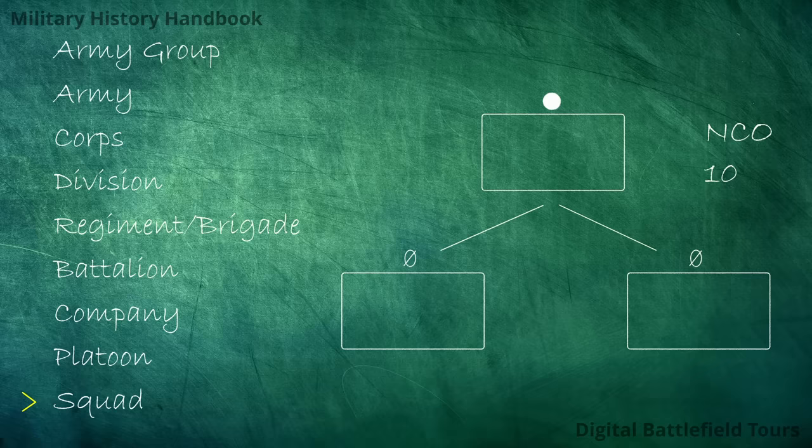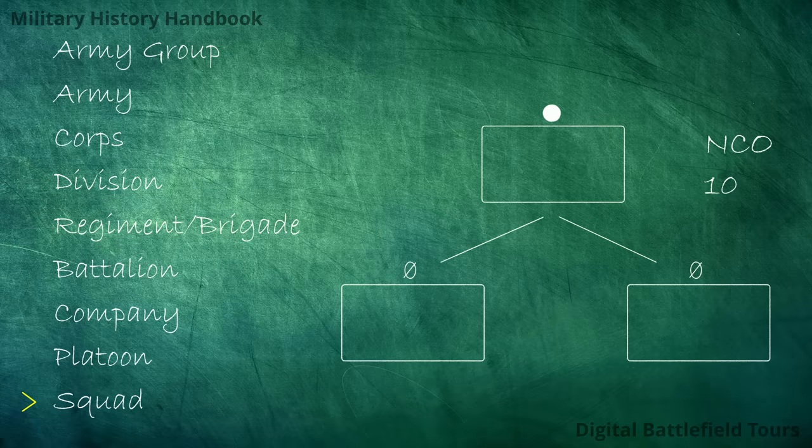In the armored or artillery arm, the equivalent of a squad would be the crew — the personnel manning a vehicle or a weapon — often ranging from five to ten men.